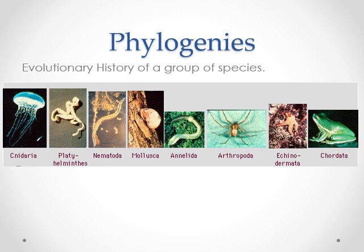Here we've got cnidarians, platyhelminthes, nematodes, mollusks, annelids, arthropods, echinoderms, and chordates - things with backbones. What I want you to do, just take about five minutes: figure out how they're related to each other. Group together the ones that are closest. Which of these look to be the most closely related? Which is the least related to all the rest?